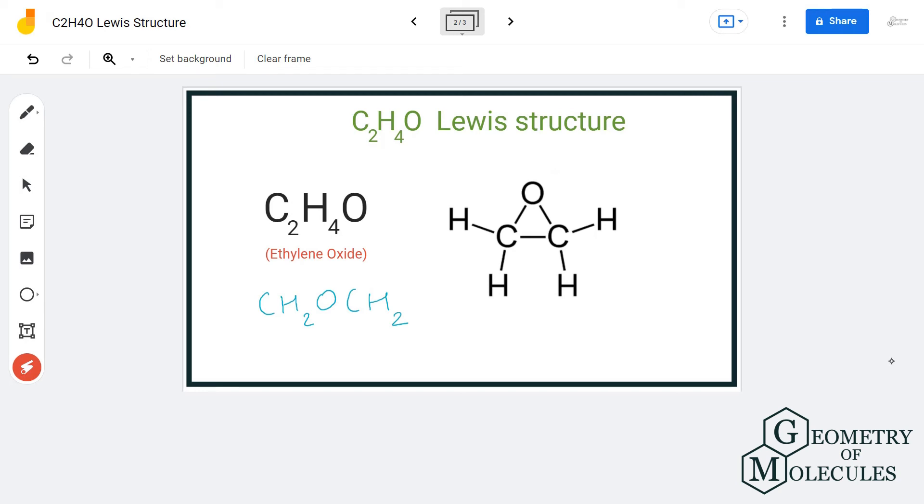Now there are other ways to present this compound as well. If you are looking at its aldehyde isomer, only one carbon atom will form a bond with this oxygen atom, but that will be for another video. And for now, this is the Lewis structure for ethylene oxide in which both these carbon atoms form a bond with oxygen atom.